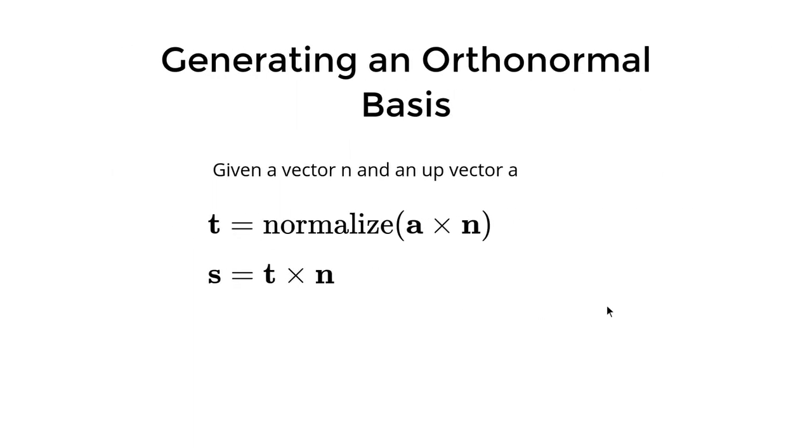To generate an orthonormal basis, we use the classic cross product trick. In 3D, this process is simple and used in a lot of graphics applications. In a lot of graphics applications we want to construct an orthonormal basis on an up vector a, and we just need to pick an a that is not parallel to n.